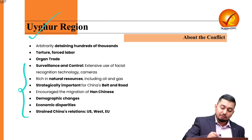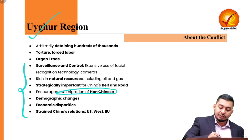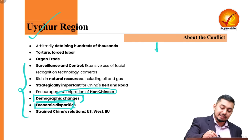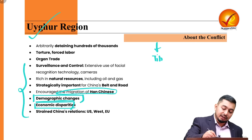China is enhancing the migration of Han Chinese into the region to bring about demographic changes. This region also suffers from economic disparity — a classic example of such disparity can be seen in China.